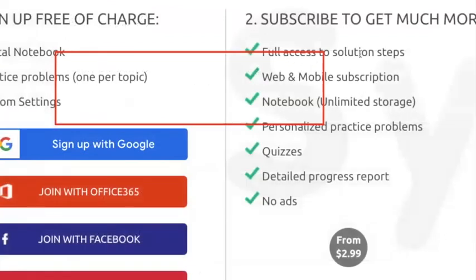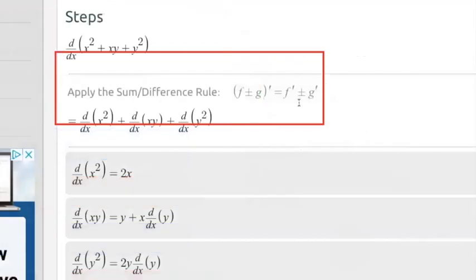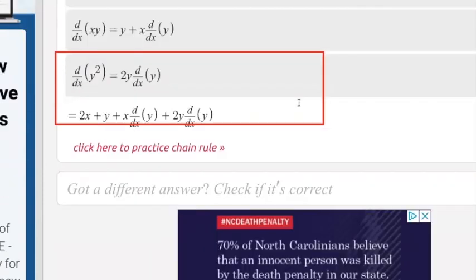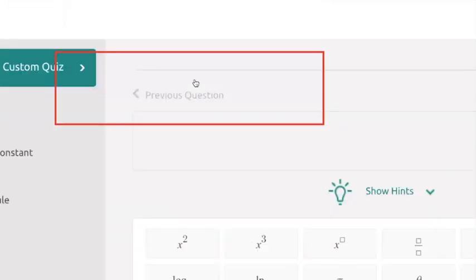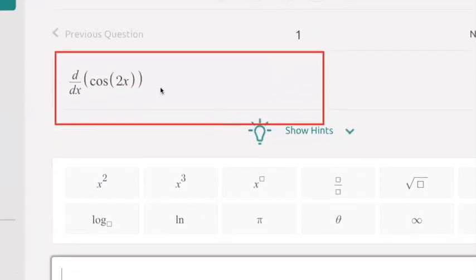So you have to be a subscriber to get more detail than what we're seeing here. But then if you look at this and you realize, wait, I might need more chain rule, you can say, well, give me more chain rule to practice. And it gives you a problem.